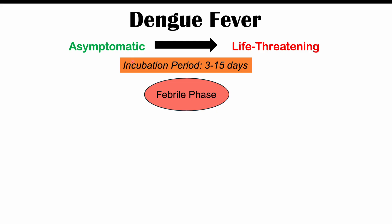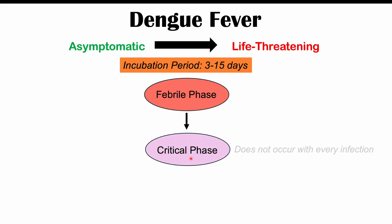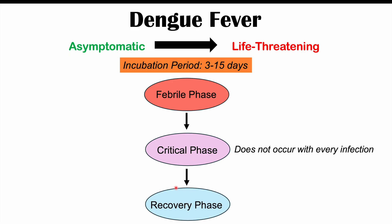There are multiple phases of this infection. The first is what we call the febrile phase — febrile means fever. The second phase is the critical phase, and not every individual will have the critical phase; this is where life-threatening issues can occur. Then we get a recovery phase. Individuals may have a mild presentation leading into recovery, or they may progress to a severe presentation and then, with proper treatment, reach the recovery phase.